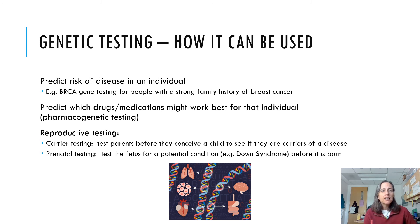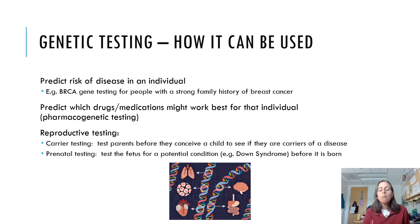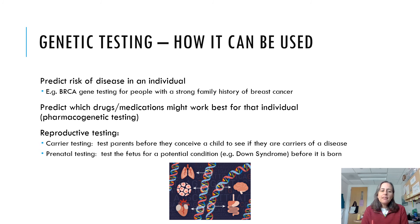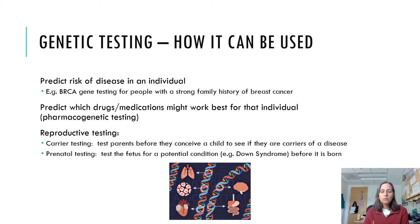Another type is prenatal testing — testing the fetus while still in the uterus to see if it might have a particular condition. The most familiar is prenatal testing for Down syndrome, or trisomy 21, where the fetus has an extra third chromosome 21, associated with medical problems, lower IQ, and characteristic facial features. This raises ethical issues because it is not something we can treat or cure. The results can help families prepare for having a child with Down syndrome, but it is also sometimes used by couples to make the decision to terminate a pregnancy.